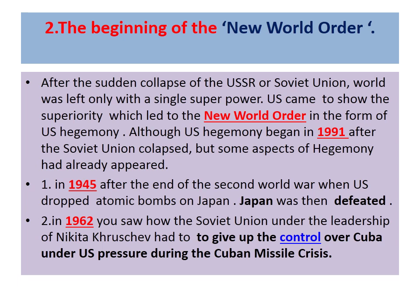Although officially US hegemony began in 1991 after the Soviet Union collapsed, some aspects of hegemony had already appeared. First, in 1945 after the end of the Second World War, when the US dropped atomic bombs on Japan and Japan was defeated. Second, in 1962, the Soviet Union under Nikita Khrushchev had to give up control over Cuba under US pressure during the Cuban Missile Crisis.